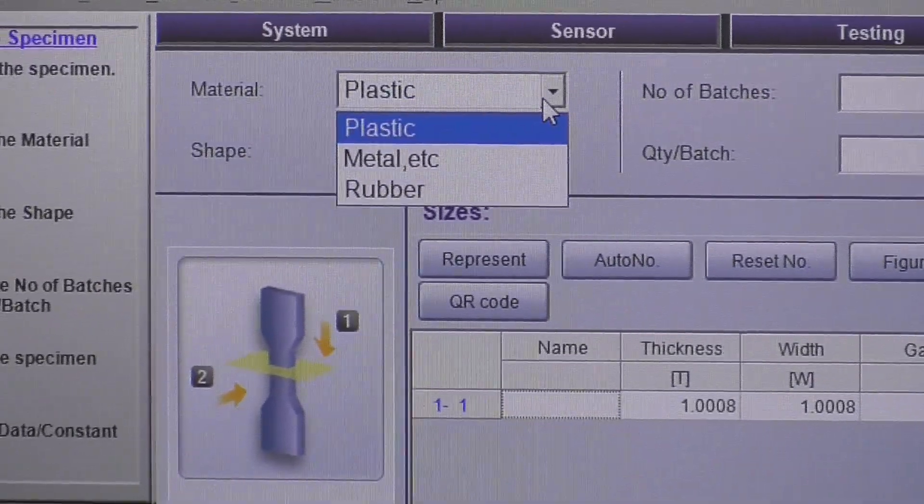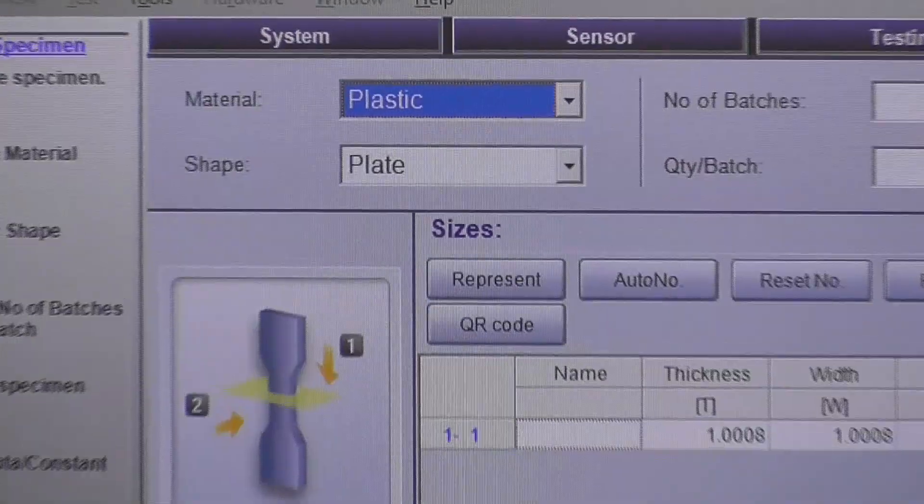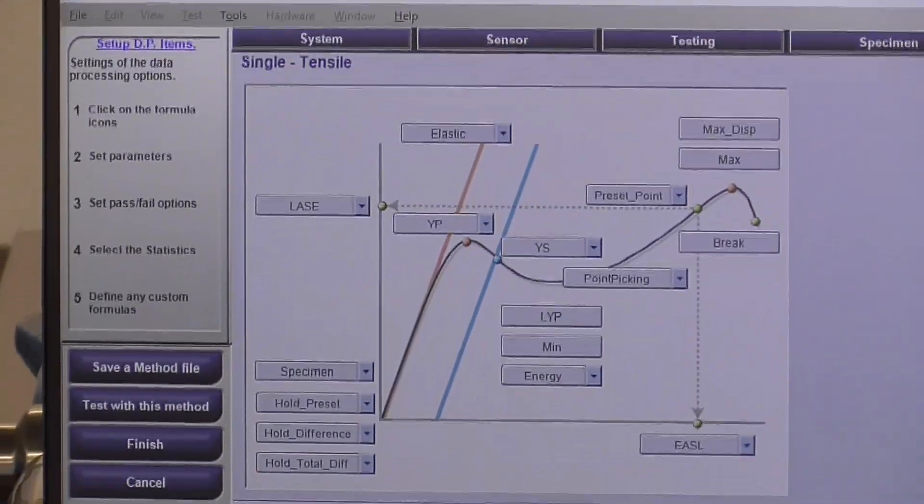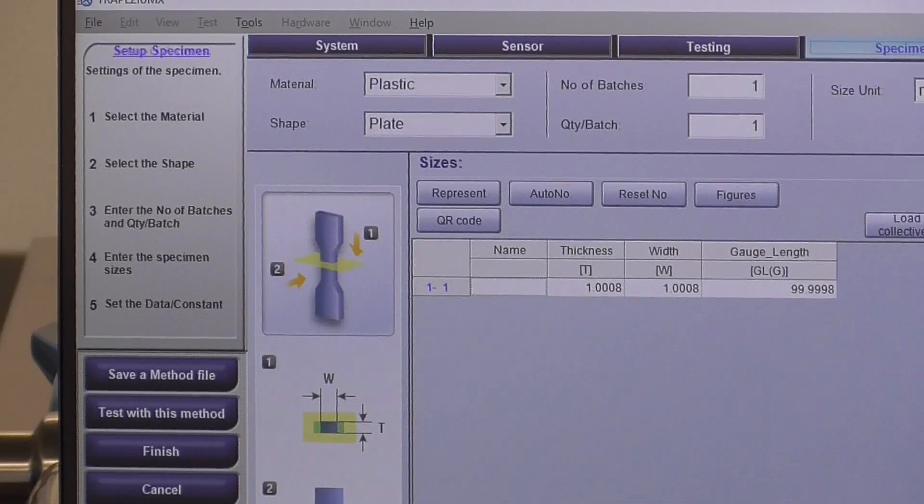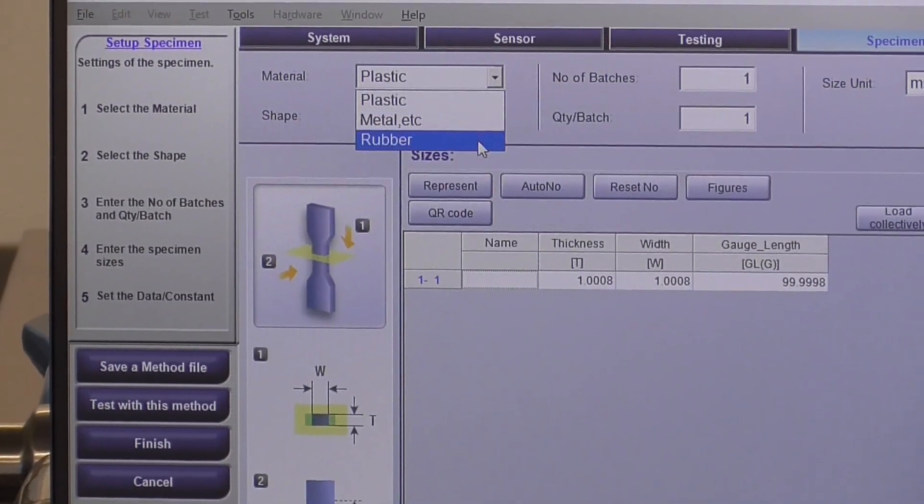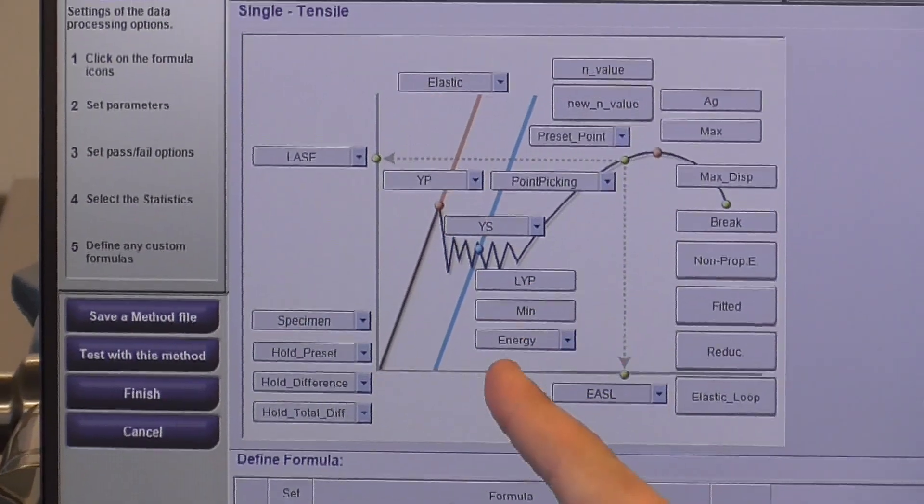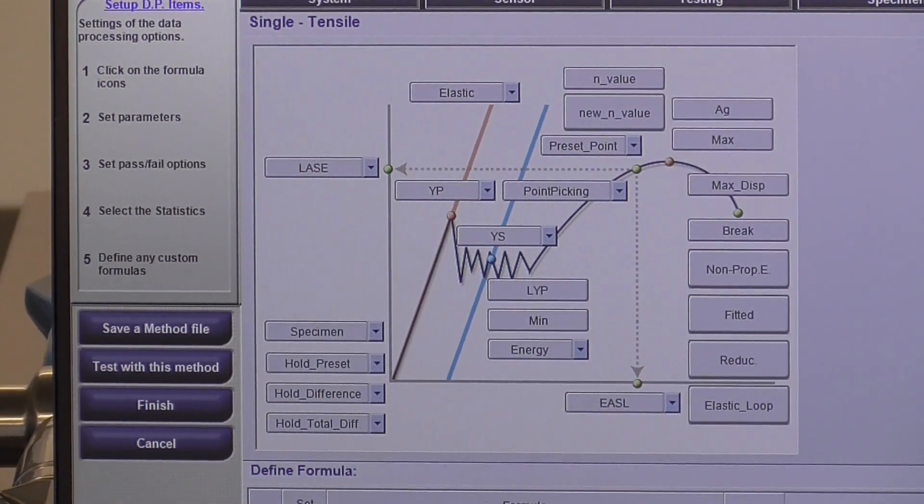For material type, you can switch between plastic, metal, and rubber. And essentially what this affects is it affects the data processing parameters which are found in your second tab. This shows a stress-strain curve that's more typical of a plastic sample. If we were to move to metal, it's going to show a stress-strain curve typical of a metal sample. And some of the data processing parameters are also specific to that material type as well.